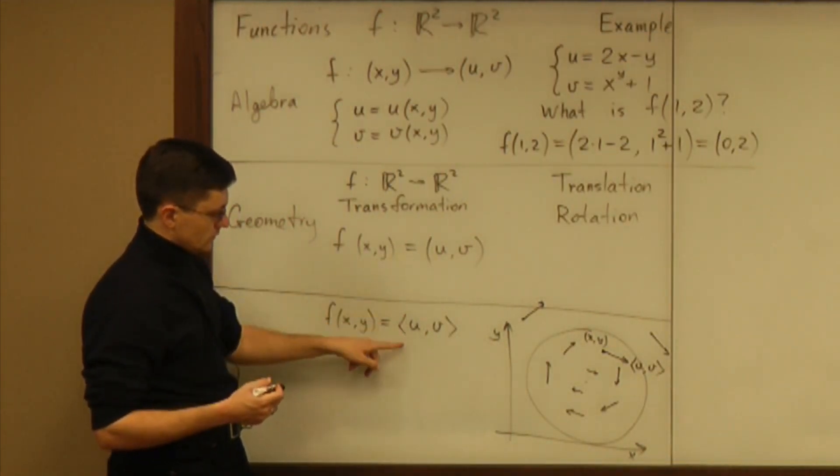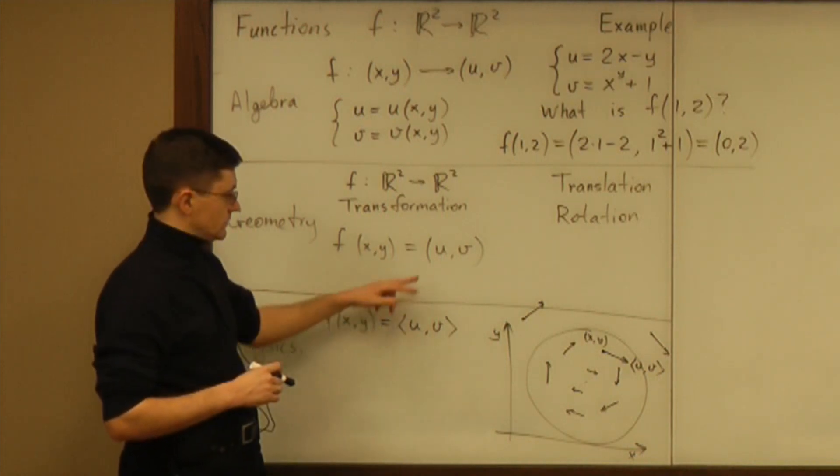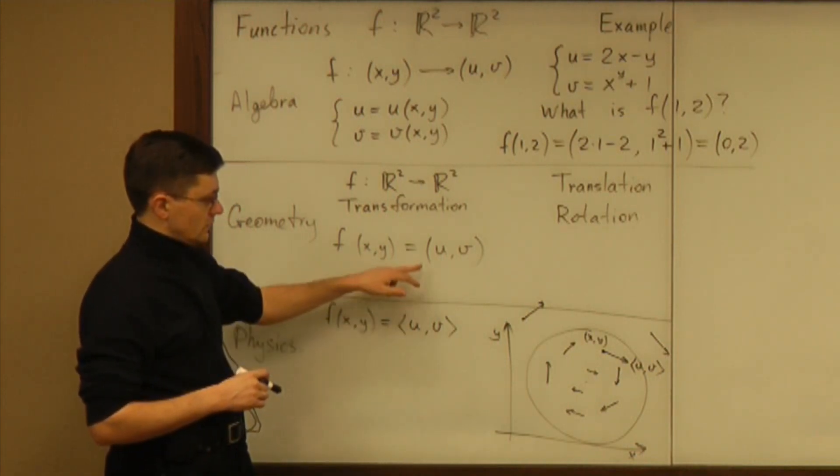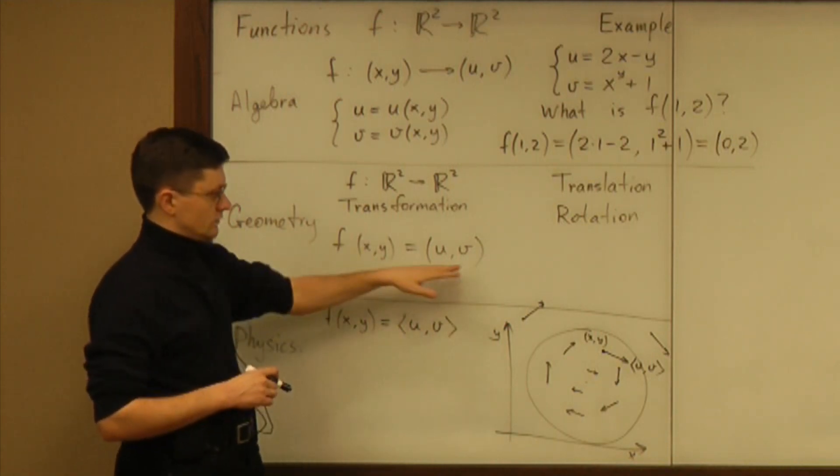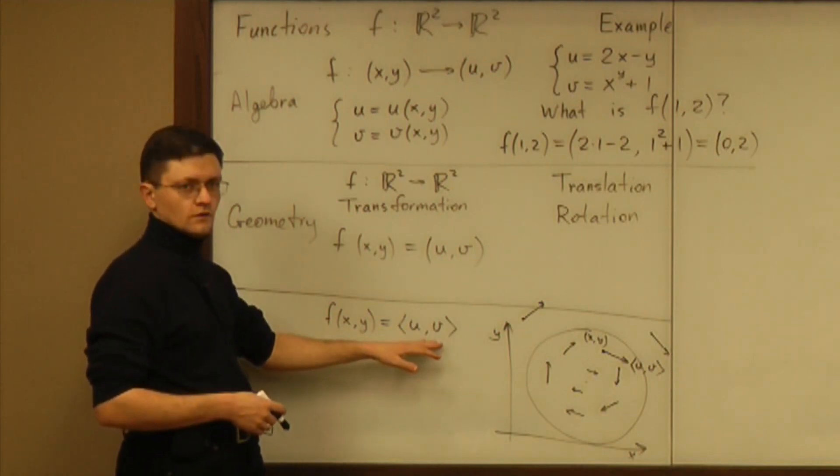Now you see there is only a little difference between the geometric approach and physics. In geometry, you assign to a point another point. In physics, you assign to a point a vector.